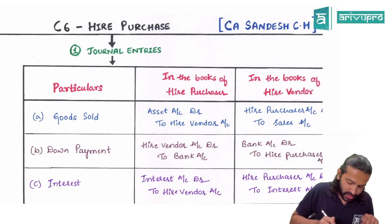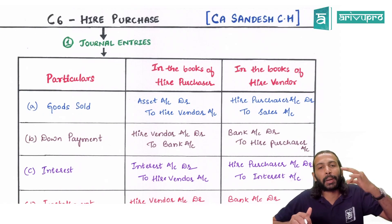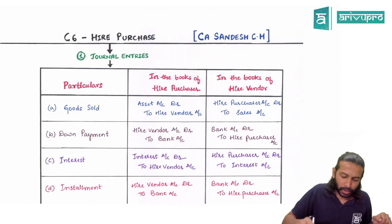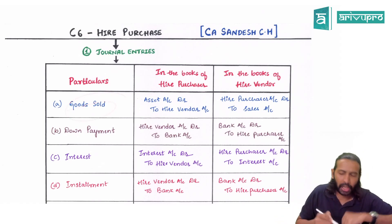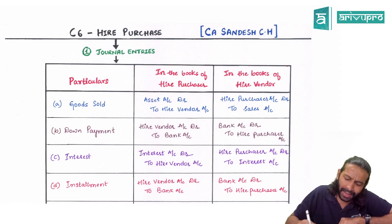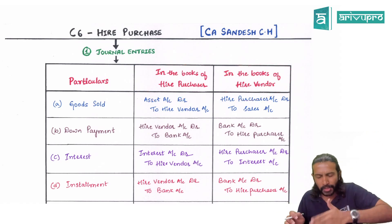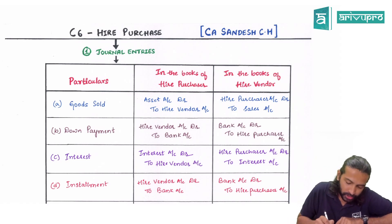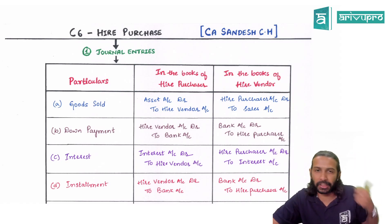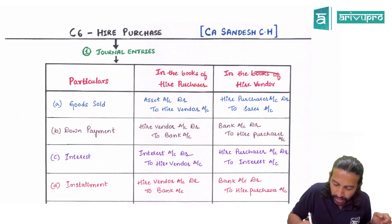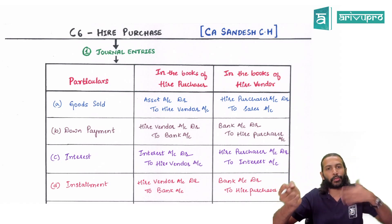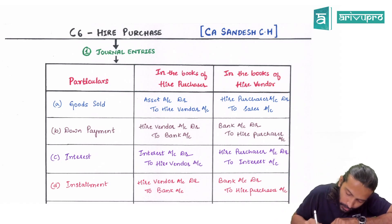Let's quickly revise chapter number six, hire purchase, with the help of our summary charts. First, journal entry — for your reference, I have given you the journal entry from the time you get into a hire purchase agreement. Now, goods sold: for a hire purchaser, it will normally be a fixed asset purchased; for a hire vendor, it will be goods. For a furniture dealer, furniture is goods, but if you and I purchase furniture, it will be a fixed asset.